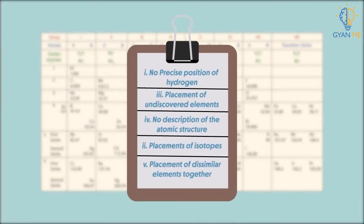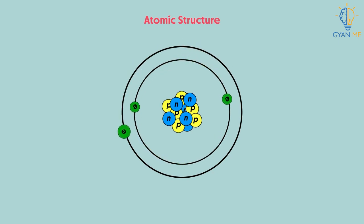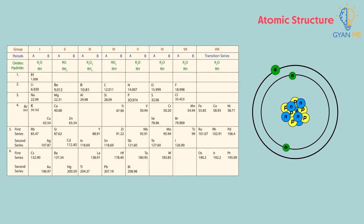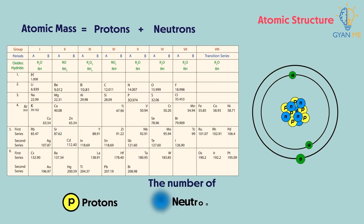The next limitation is that there was no description of atomic structure in his table. What do I mean when I say atomic structure? The atomic structure of any atom of an element gives us the number of protons, neutrons, and electrons present in it. We know that Mendeleev's table was based on atomic mass of an atom. You already know that atomic mass of any atom is equal to sum of protons and neutrons. But this atomic mass does not tell us the number of protons, neutrons, or electrons in the atom. In short, nothing can be clearly predicted about the structure of an atom from its atomic mass.